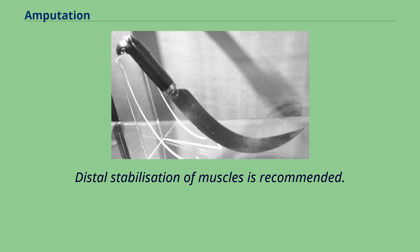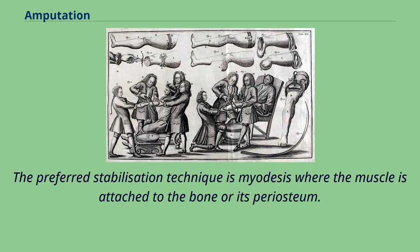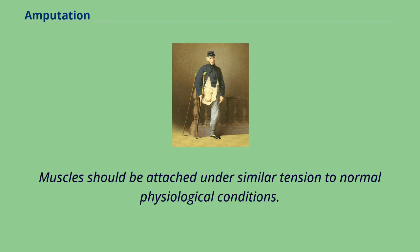Distal stabilization of muscles is recommended. This allows effective muscle contraction which reduces atrophy, allows functional use of the stump, and maintains soft tissue coverage of the remnant bone. The preferred stabilization technique is myodesis, where the muscle is attached to the bone or its periosteum. In joint disarticulation amputations, tenodesis may be used where the muscle tendon is attached to the bone. Muscles should be attached under similar tension to normal physiological conditions.